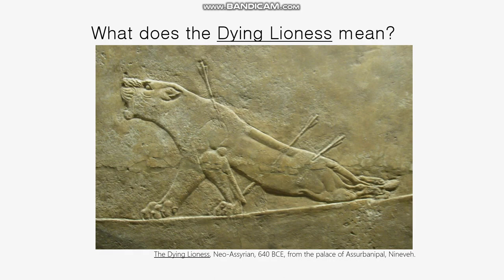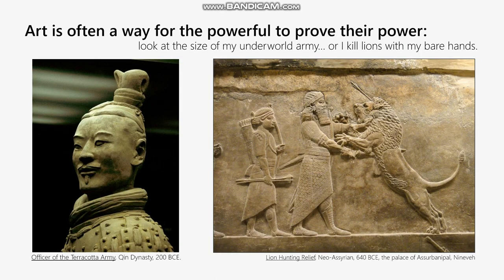Maybe the sculptor — possibly a captive from another ethnic group — wasn't expressing kinship with the lions being destroyed. Perhaps he was simply trying to make the most powerful and emotionally exciting scene possible, and depicting the suffering of the lions as palpable was part of making the scene exciting and making Ashurbanipal look great. Most of that frieze is clearly in support of the powers that be — communicating 'I'm so powerful I kill lions with my bare hands.'